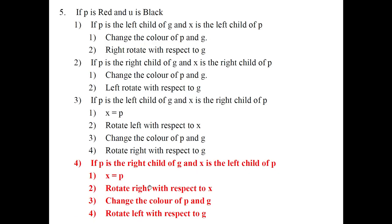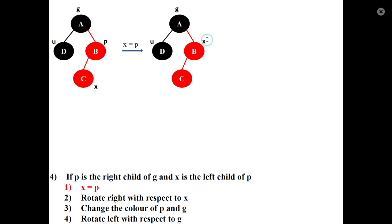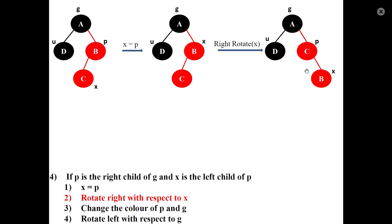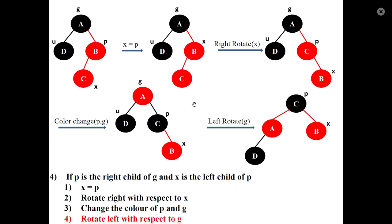Fourth case: new node X is in the right-left position — grandparent's right child is parent, parent's left child is X. First operation: set X equal to P, update X to B. Perform a right rotation with respect to B. C becomes the parent and A is the grandparent. Next, change the color of parent and grandparent, then perform a left rotation with respect to the grandparent.